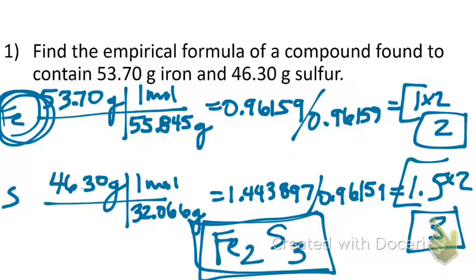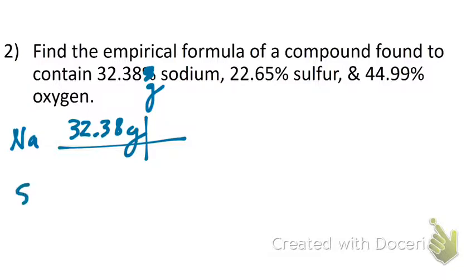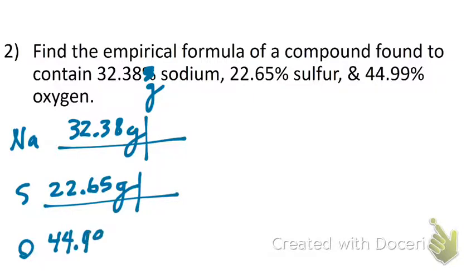So, not really that bad of a process, but you have to remember every single little step or else you're not going to get nice whole numbers as subscripts. So, next problem. Well, this one gives us percents, which is the only real difference, and I guess there's three elements there. So, we've got to be a little bit more conservative in space. But remember, just change these percents into grams as we write them down here. So, sodium has 32.38 grams, and sulfur is 22.65, and oxygen is 44.99. So, I found grams of each of my substances.